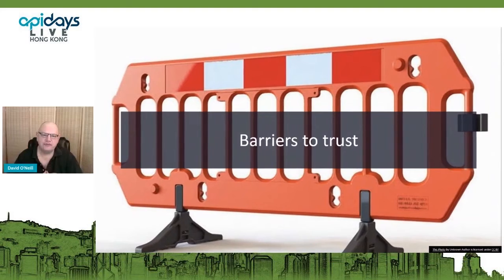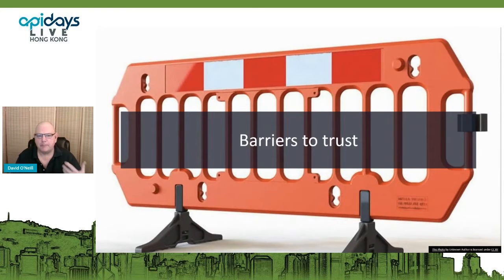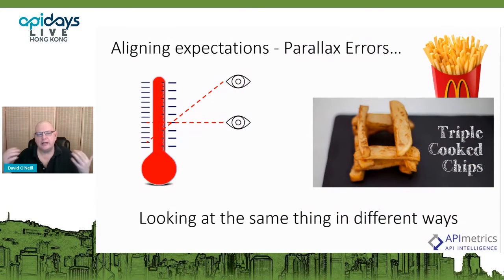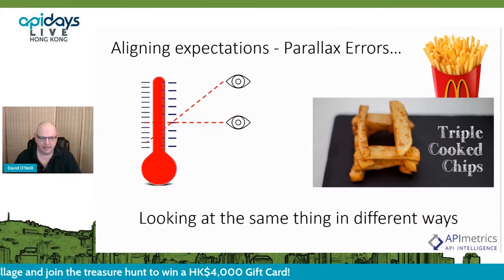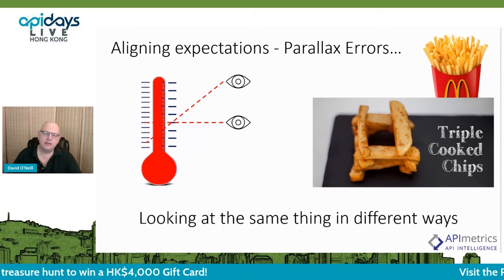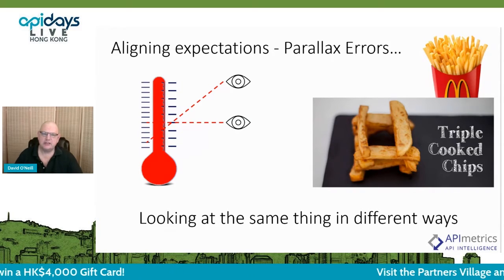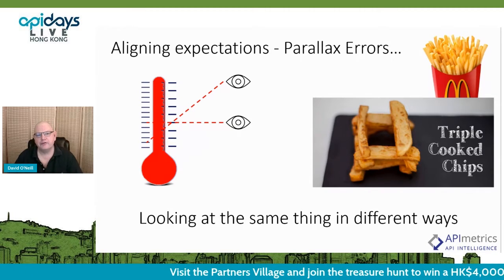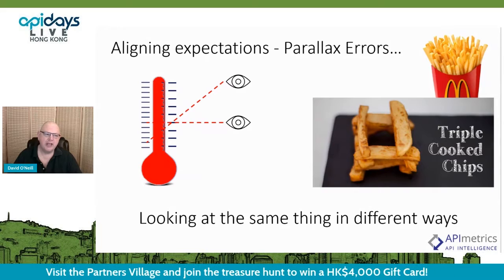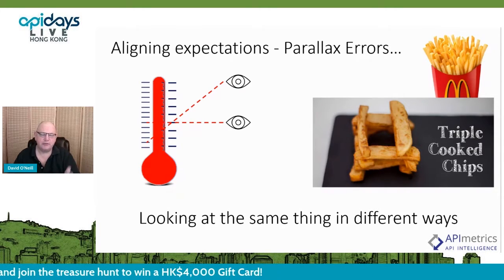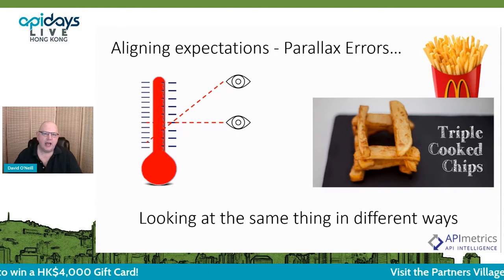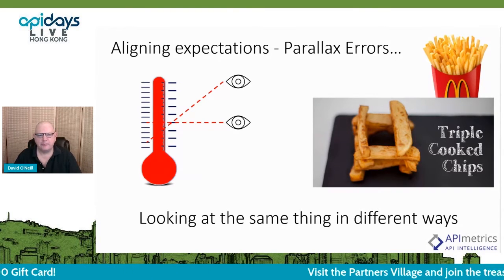Talking about some barriers to trust: one of them is aligning expectations. In engineering, where I started, we call these parallax errors — where you can look at exactly the same thing, but the way you look at it impacts what number or metric you see. The most common example taught to young engineers is a thermometer: if you look straight on at the temperature, you'll see a different number than if you're looking at an angle.